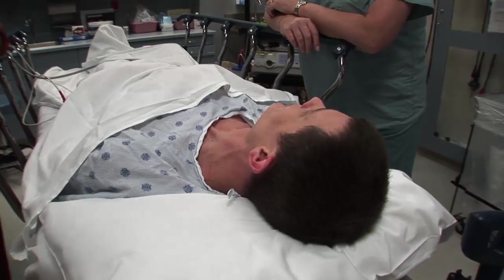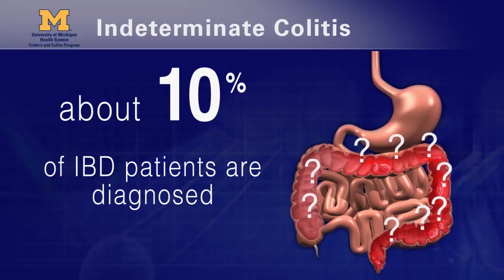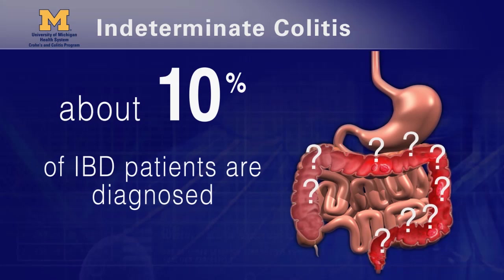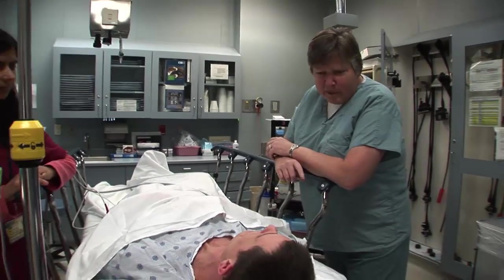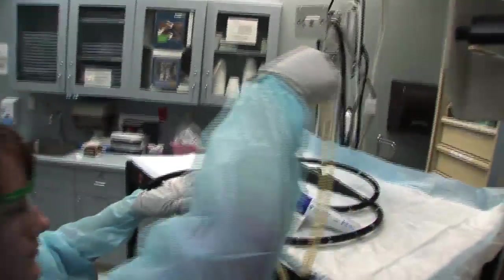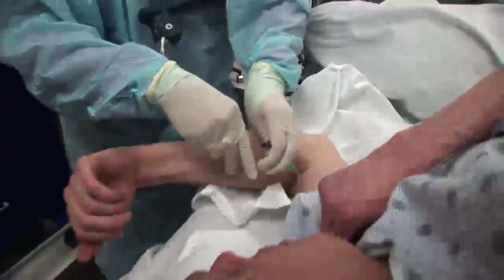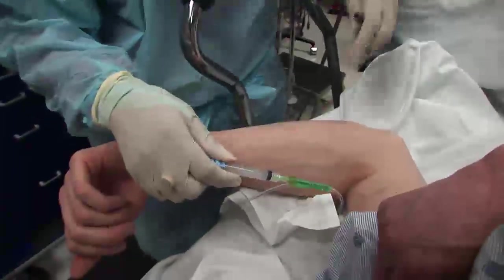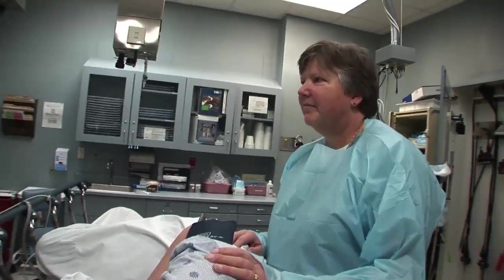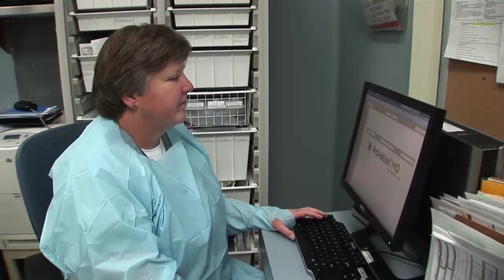About 10% of IBD patients are diagnosed with indeterminate colitis. Indeterminate means that we just can't figure out what kind it is — this is a condition that is clearly a chronic inflammatory disease of the colon, but there is something that suggests it might be Crohn's rather than just ulcerative colitis. Sometimes that can be segmental inflammation or especially deep ulcers, which can both suggest Crohn's disease.